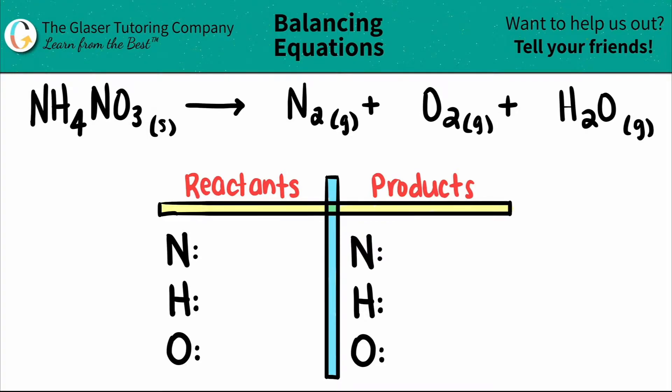Today we're going to be balancing the equation of NH4NO3, ammonium nitrate, which will break down or yield into N2 gas plus O2 gas plus H2O gas.